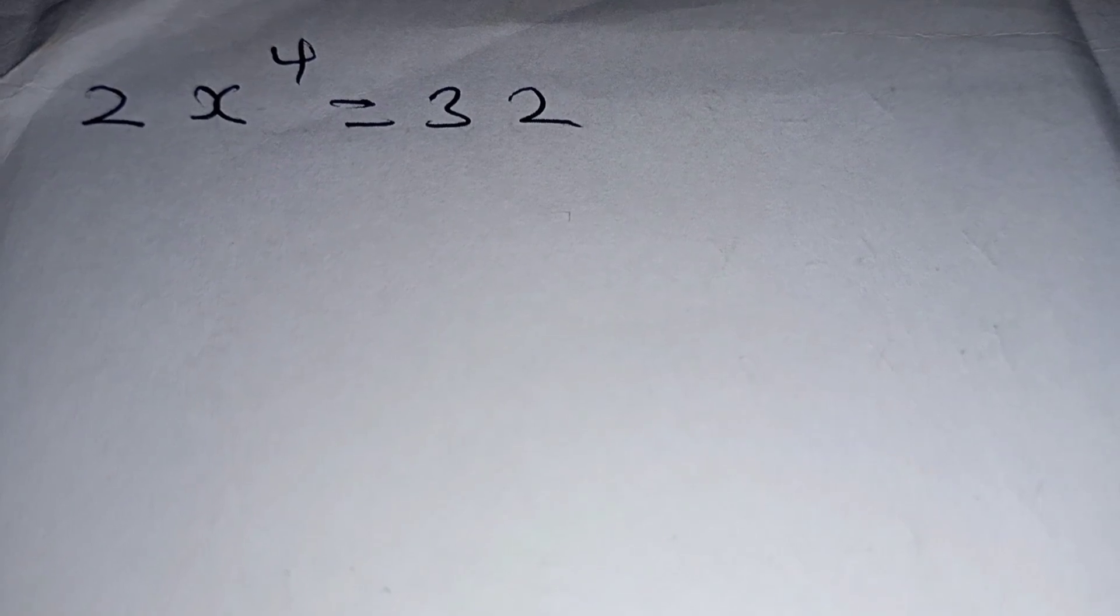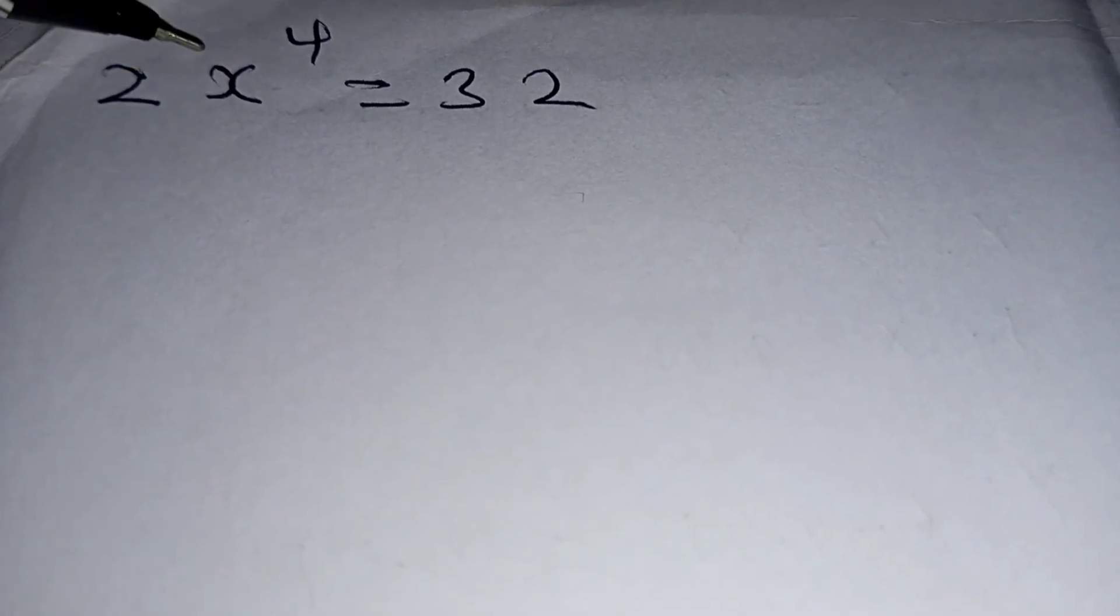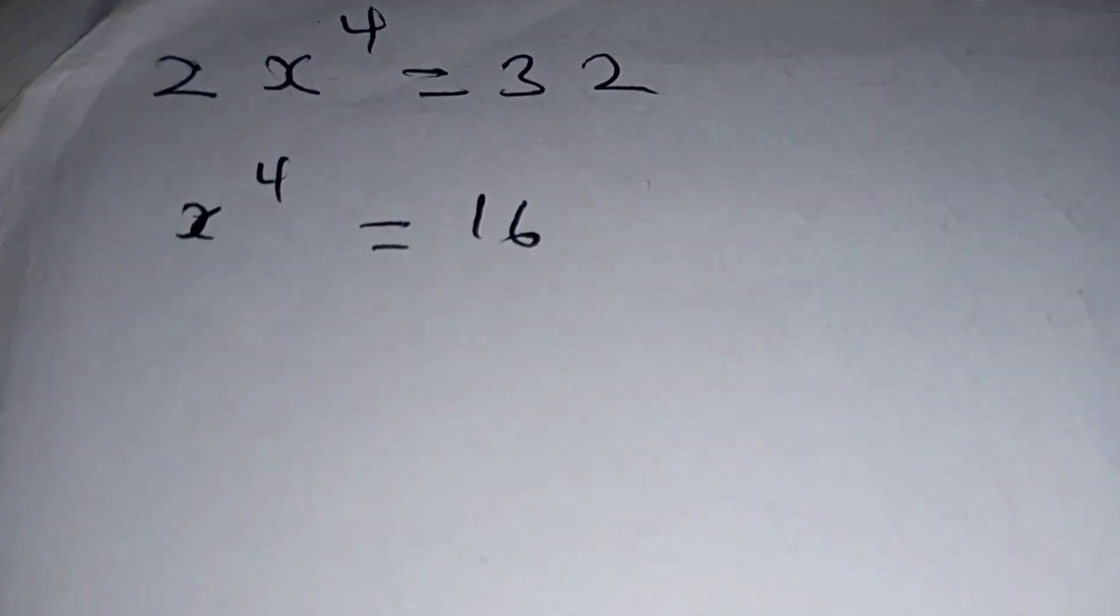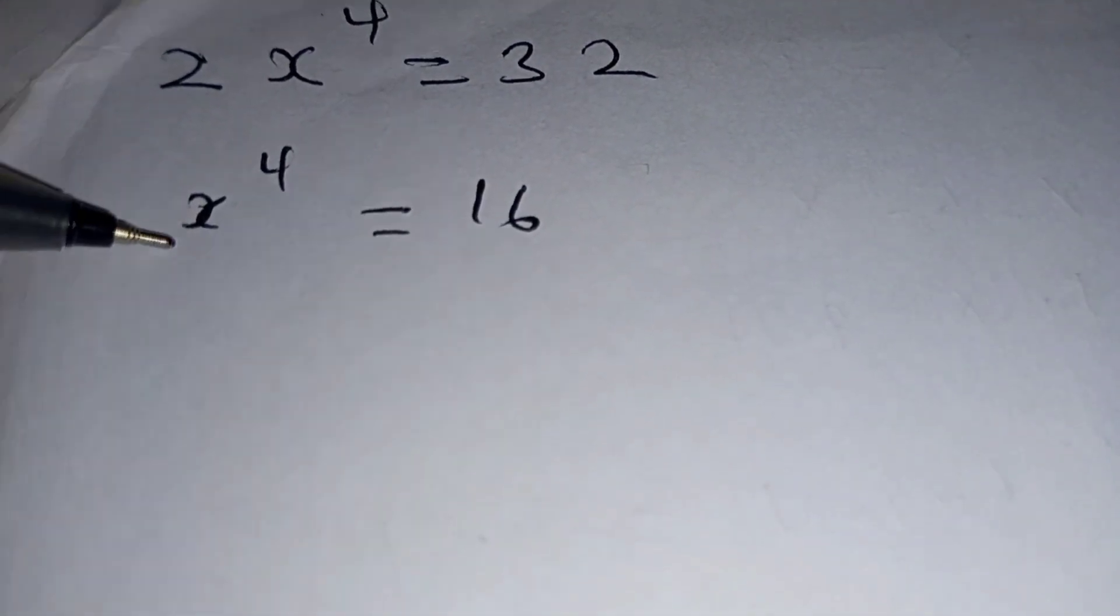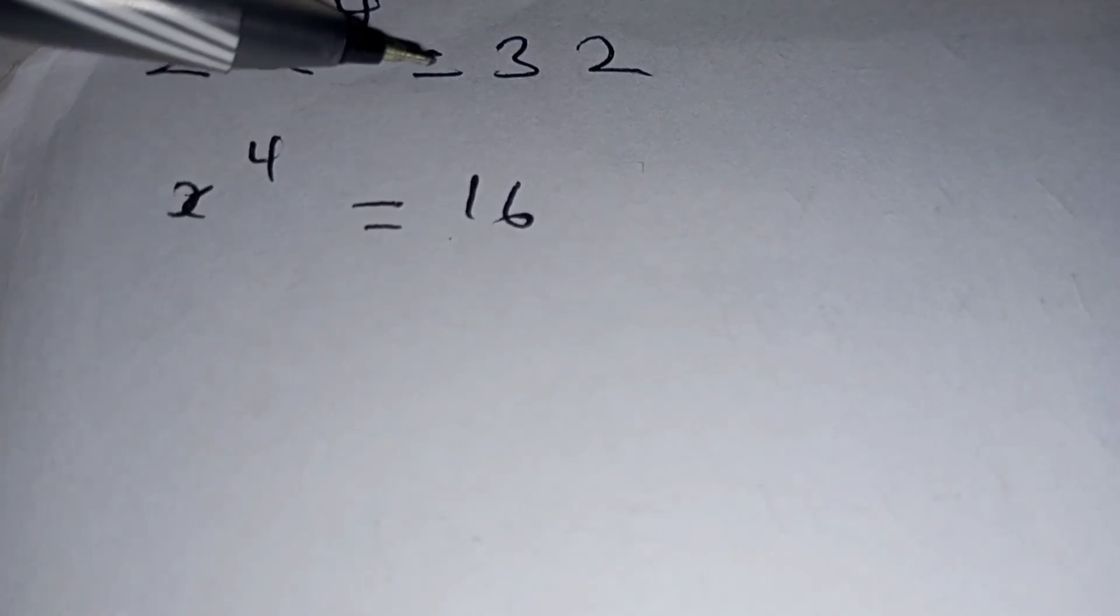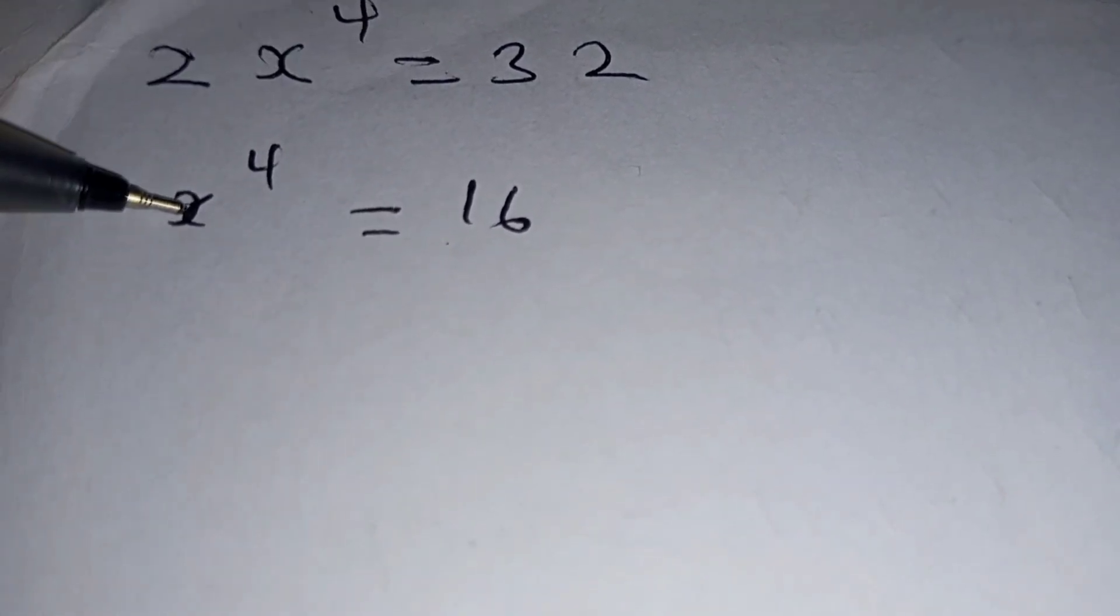We have 2x^4 = 32, so the first thing is dividing by 2 both sides so that we obtain x^4 = 16, since 32 divided by 2 is 16.